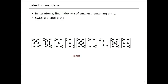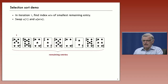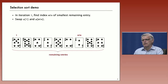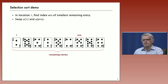Selection sort is based on iterating that idea. The basic method is, in the i-th iteration, find the smallest remaining entry to the right of i — bigger index than i — and swap that with i. When we start out, i is at the left end and all remaining entries are to the right. We scan through and the smallest one is the two, three entries from the right, so we swap that. That's the first step.